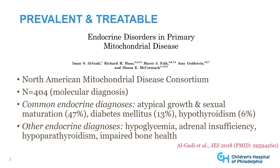She examined 404 children and adults with molecular diagnoses of mitochondrial disease, and found that several endocrine diagnoses were particularly prevalent in this cohort, including atypical growth and sexual maturation, which was present in nearly half the group. Diabetes mellitus affected at least one in ten, and hypothyroidism was prevalent at around the same rate as in the general population.